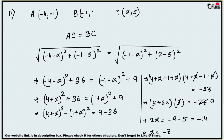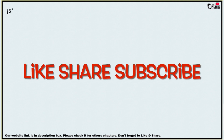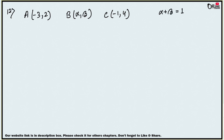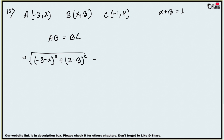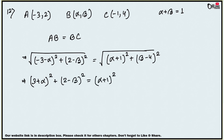If you like my video, please share and subscribe to my channel. Sum number 12: A(−3, 2), B(α, β), C(−1, 4) are vertices of an isosceles triangle. Prove that α plus β equals 1, where AB equals BC. Using the distance formula: AB equals root over [(−3 − α)² + (2 − β)²] and BC equals root over [(α + 1)² + (β − 4)²]. Squaring both sides gives (3 + α)² + (2 − β)² equals (α + 1)² + (β − 4)².